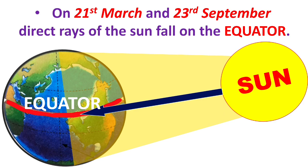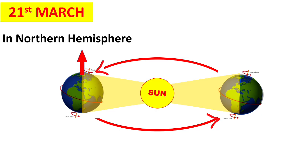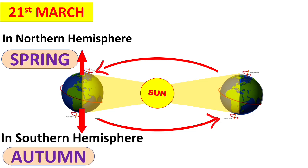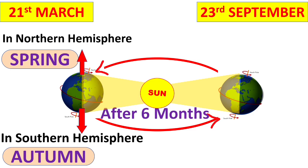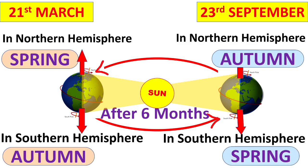The whole earth experiences equal days and equal nights on equinoxes. On 21st March, in the northern hemisphere it is spring season, and on the same day in the southern hemisphere it is autumn season. After six months, on 23rd September, in the northern hemisphere it is autumn season and in the southern hemisphere it is spring season. Thus, days and nights and changing seasons are caused by the rotation and revolution of the earth respectively.